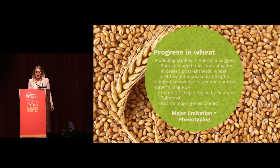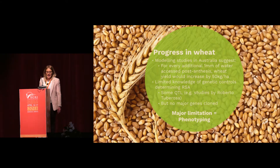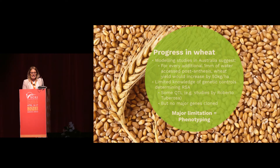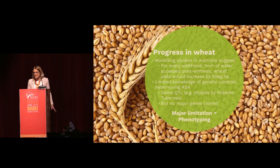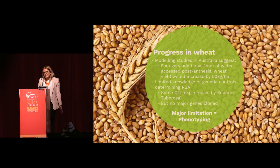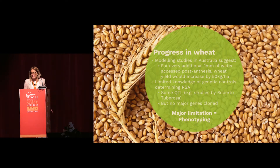In wheat we are starting to make progress, and you'll also hear from Roberto Barrosa in the next session who has looked at genes influencing root system architecture. Modeling studies in Australia have shown that for each additional millimeter of water captured post-anthesis, there can be significant yield increases. So if we can modify root systems to capture more water — whether from rain or deep in the soil during post-anthesis — we have an ability to improve yield.